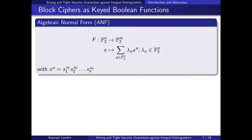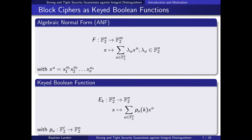For any boolean function, we can represent it with its algebraic normal form (ANF), writing it as a polynomial over F2. For a block cipher — which is essentially a keyed boolean function — instead of just having a coefficient lambda_u in F2 in front of each monomial, we have a polynomial p_u which depends on the key k. We see our block ciphers as keyed boolean functions with ANF given as the sum of p_u(k) times x^u.